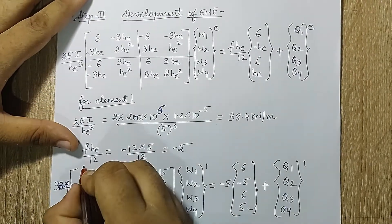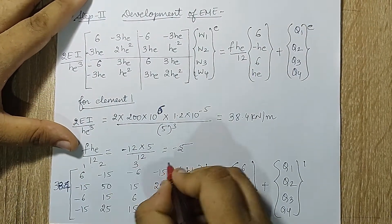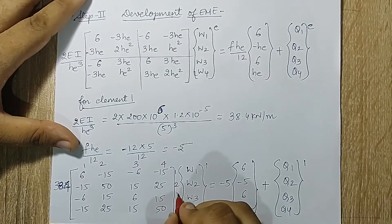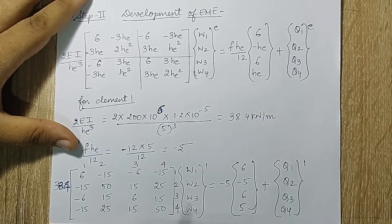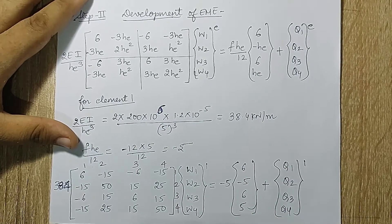Now let's substitute these values in this equation. So this is what I get when I substitute the two values. Now I am going to mark the degree of freedom. First element is between node 1,2. The degree of freedom is 1,2,3,4.